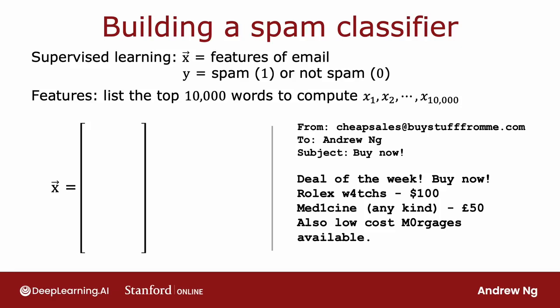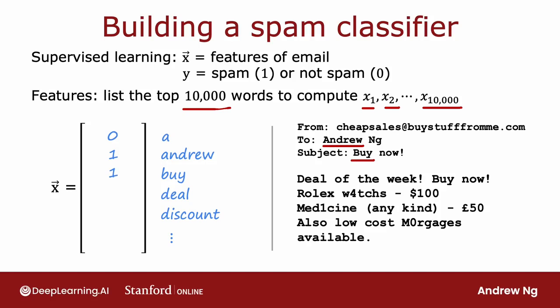This application is an example of text classification, because you're taking a text document — an email — and trying to classify it as either spam or not spam. One way to construct the features of an email would be to take the top 10,000 words in the English language and use them to define features x1, x2 through x10,000. For example, given this email on the right, if the list of words includes a, Andrew, buy, deal, discount, and so on, then we would set these features to be 0 or 1 depending on whether or not that word appears. So you can construct 10,000 features of this email.